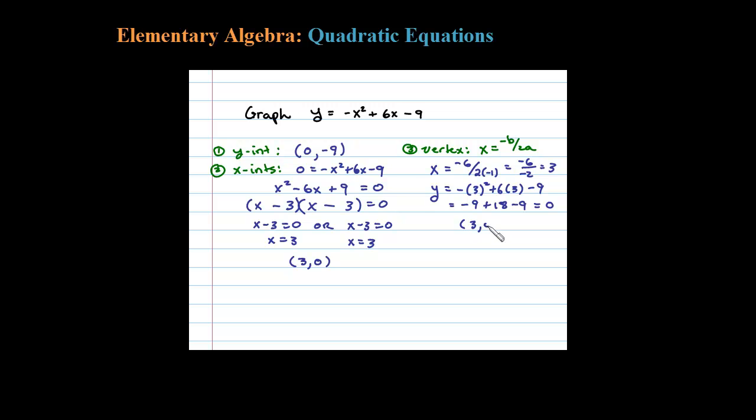We have the y-intercept, we have the x-intercept, there's only one, and we have the vertex. In fact, though, we only have two points, and certainly two points are not enough to graph a parabola. So we're going to have to make a chart of values and choose a couple other points to see what this picture is going to look like.